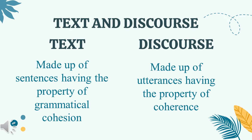Let us differentiate text and discourse. When we say text, it is made up of sentences having the property of grammatical cohesion. Since we are talking about text, it is very important to check if the following parts are connected — that is what we call cohesion. It has something to do with the technical construction of the sentences.